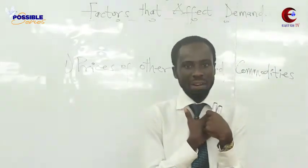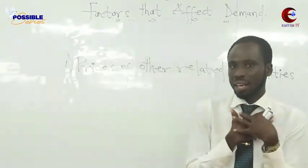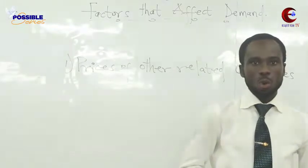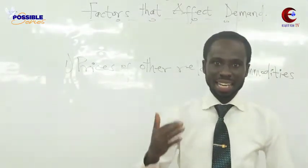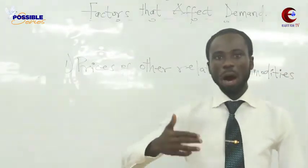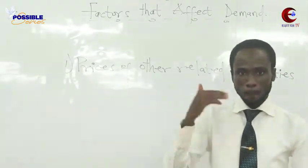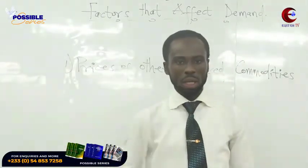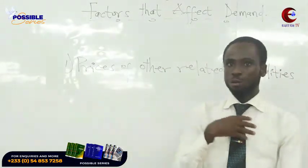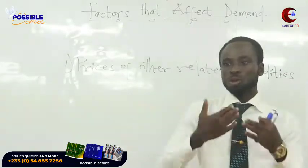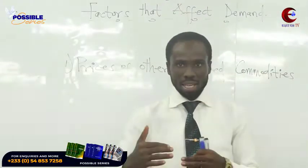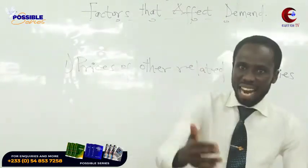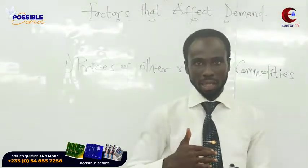Assuming we are the board of directors for Richoku. Speculatively, we have gotten information that Ghana Nestle Company — that is Milo — are about to increase their price. The first thing we as board of directors have to do is sit down and analyze the impact that this pending increment in the price of Milo will have on our commodity.